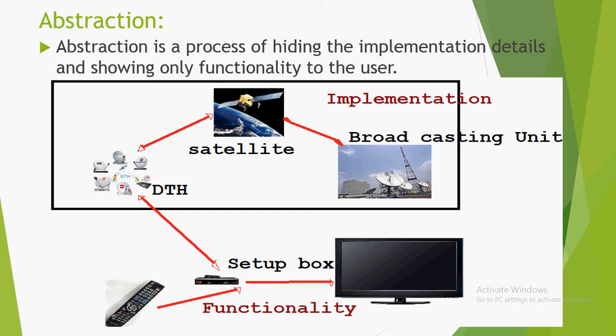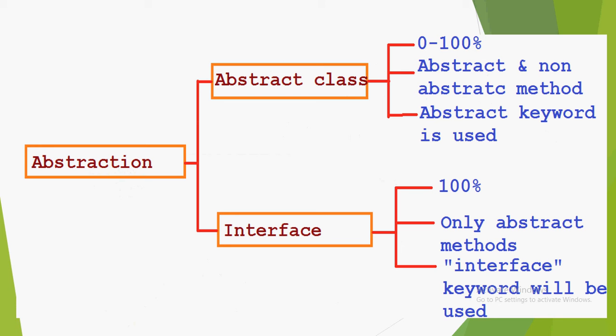In Java, abstraction is done with abstract class as well as by using interfaces. By using abstract class we can do abstraction up to 0 to 100%.